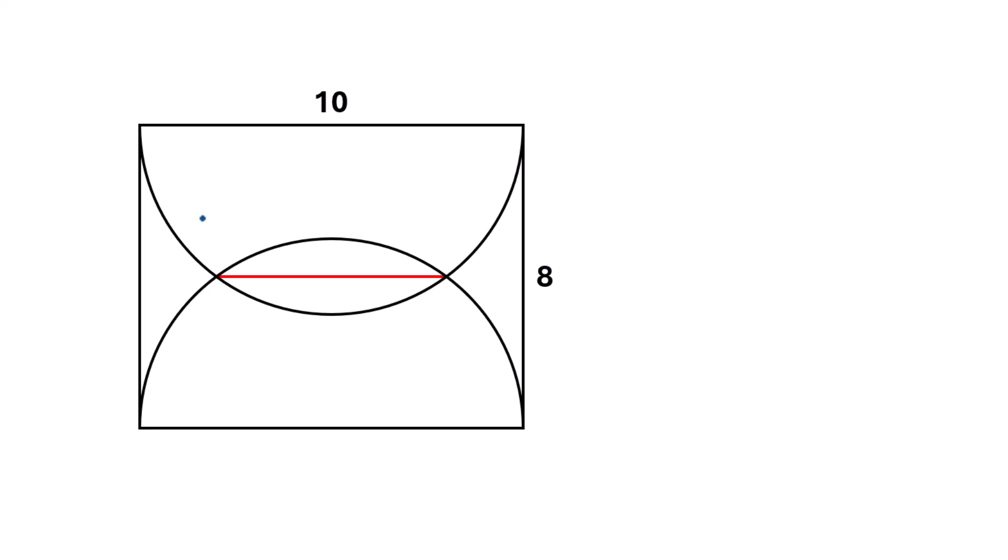There are two semicircles along the length of the rectangle and our task is to find out the length of these two intersecting points of the semicircles.